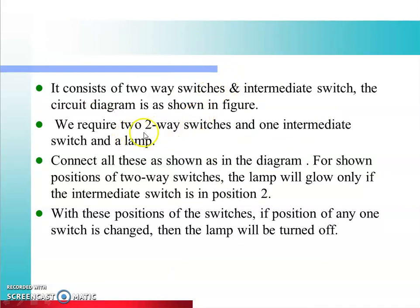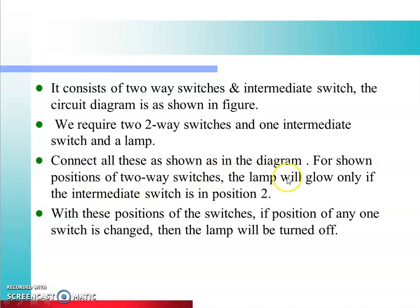It consists of two two-way switches and one intermediate switch and the lamp. Connect all components as shown in the diagram. For the shown position of two-way switches, the lamp will glow only if the intermediate switch is in position 2. When the knob of the switch is up, contacts 1 and 3 are connected and 2 and 4 are connected; when the knob is down, 1 and 2 are connected and 3 and 4 are connected.